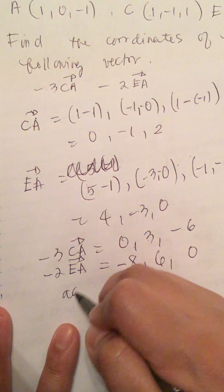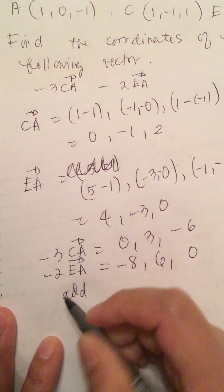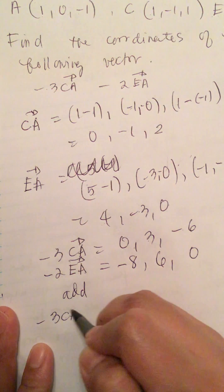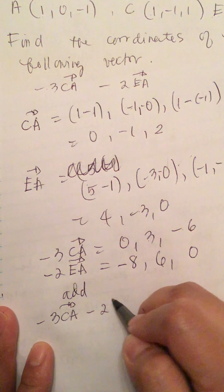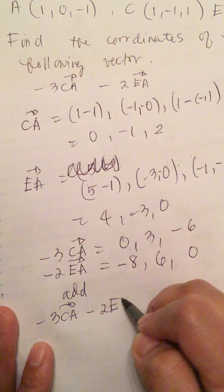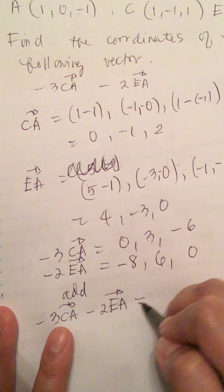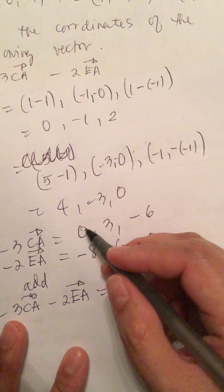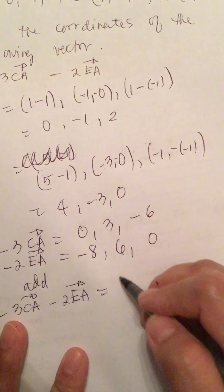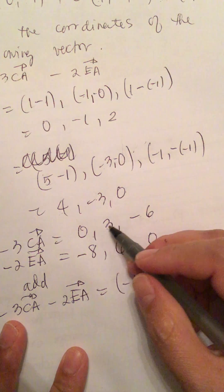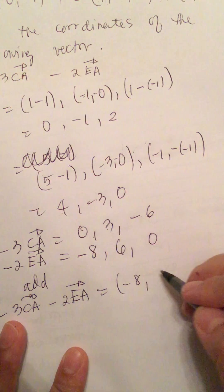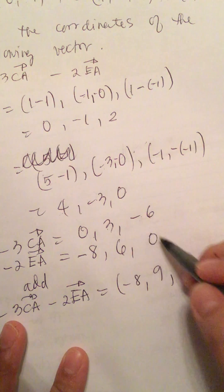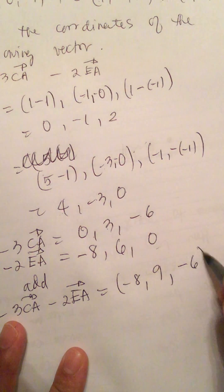So we add this: minus 3 vector CA minus 2 vector EA is equal to (0 minus 8) is minus 8, (3 plus 6) is 9, and (minus 6 plus 0) is minus 6. So the final answer is (-8, 9, -6).